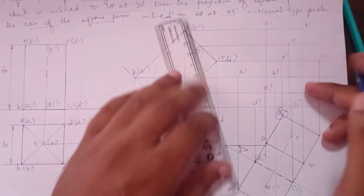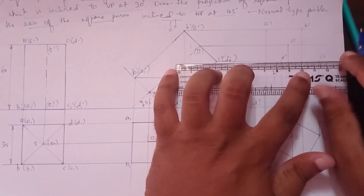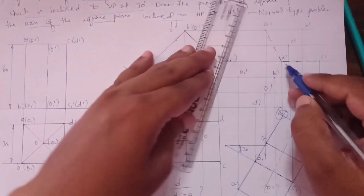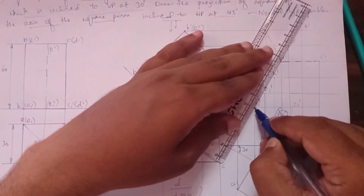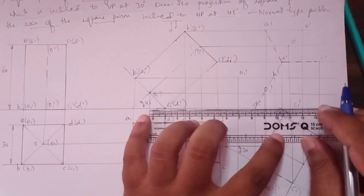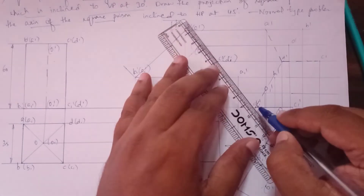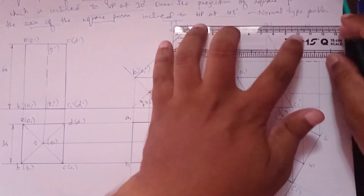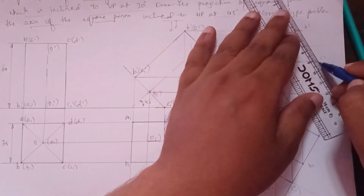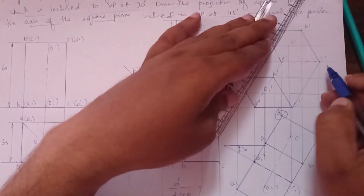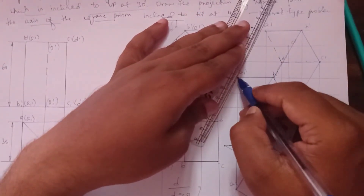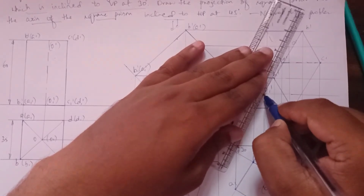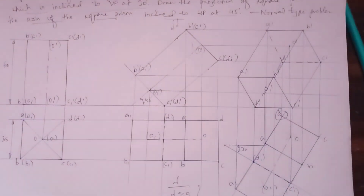You can see the lines: D to C-dash, D to E-dash, and D to D1-dash. Everything should be completed with a continuous line. Finally, connect the axis with a straight chain-dot line. This completes the problem.